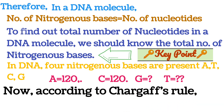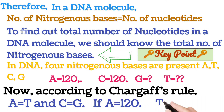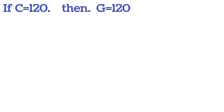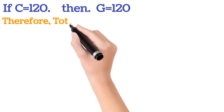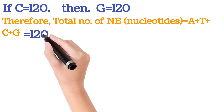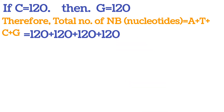According to Chargaff's rule, adenine equals thymine and cytosine equals guanine. So if adenine is 120, thymine should also be 120. If cytosine is 120, guanine should also be 120. Now you know all four values. Total number of nitrogenous bases = A + T + C + G = 120 + 120 + 120 + 120 = 480.